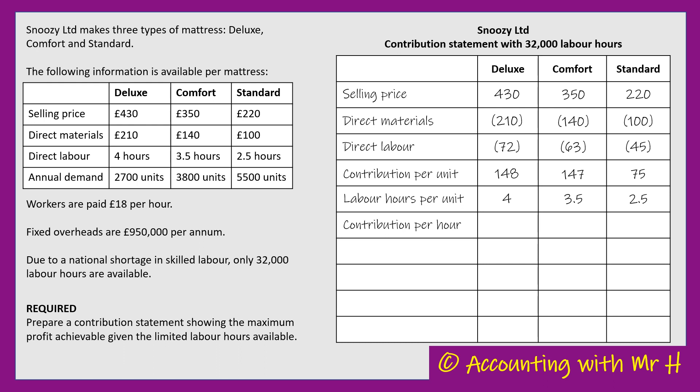Looking at the Deluxe, we've already calculated the contribution per unit is £148. But we need four of these precious labour hours to generate that £148 of contribution. So I'm going to divide 148 by four, and that tells me the Deluxe mattress will generate a contribution per labour hour of £37.